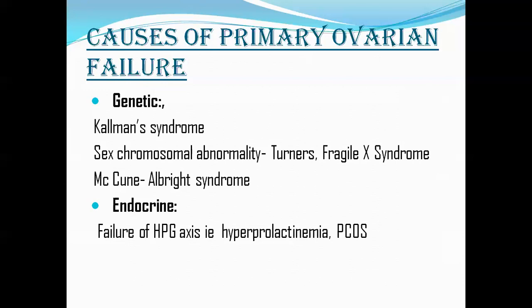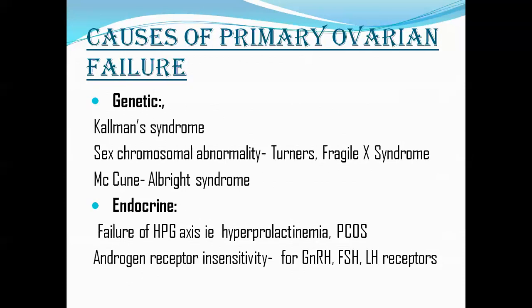Other causes of primary ovarian failure: hyperprolactinemia, polycystic ovarian syndrome (PCOS), androgen receptor insensitivity, gonadotropin receptor insensitivity, or GnRH receptor insensitivity — where levels of GnRH or LH/FSH may be normal but gonadal development is abnormal — and enzyme deficiencies such as aromatase (CYP19) or CYP17 abnormality. These patients never have menses, so this is also a cause of primary amenorrhea.